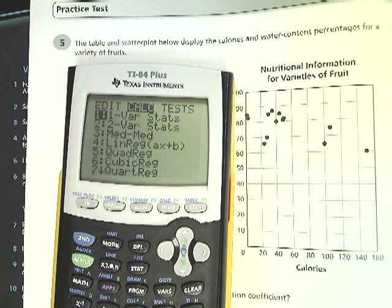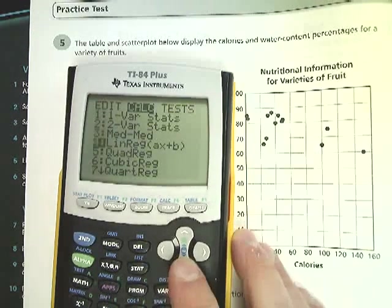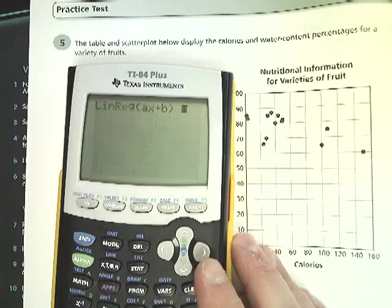What I'm going to look at here is a linear regression. A regression is the actual analysis itself of how close the points are to making a line. So I'm going to go down to linreg ax plus b and I'm going to hit it.